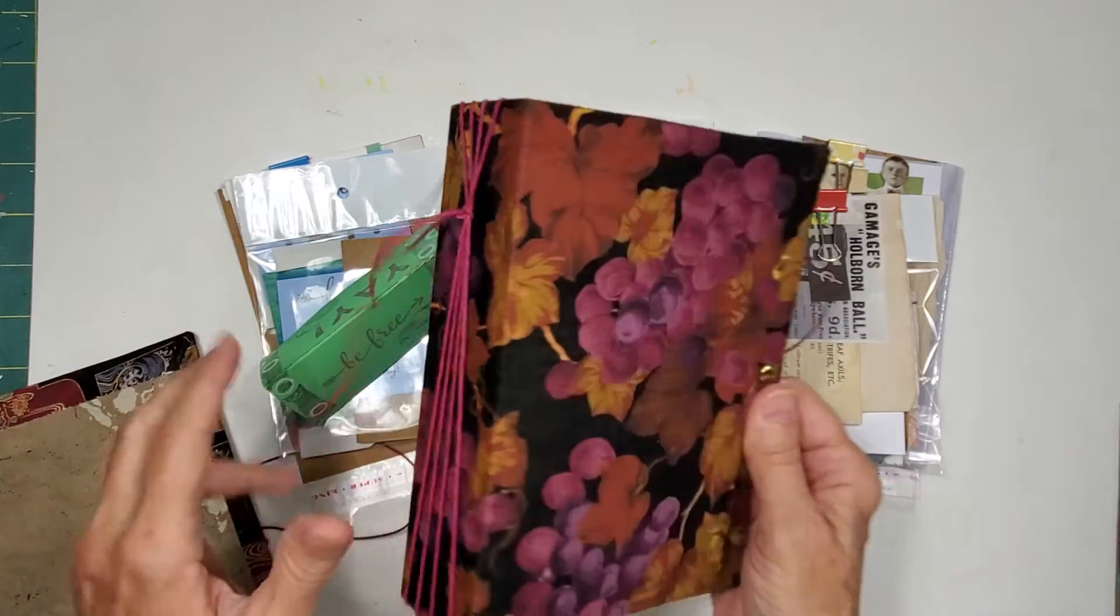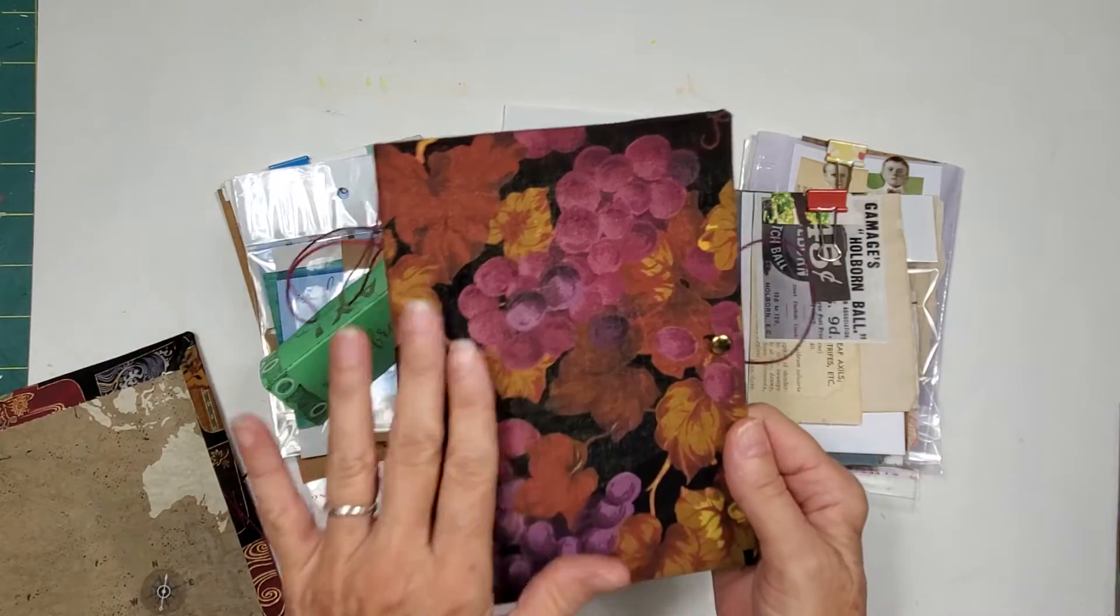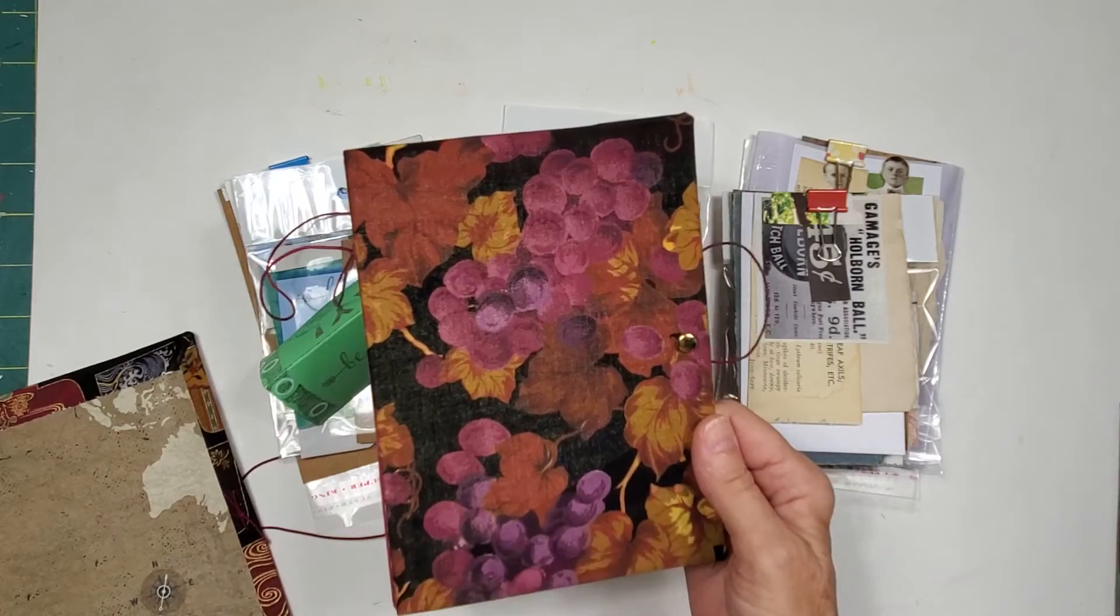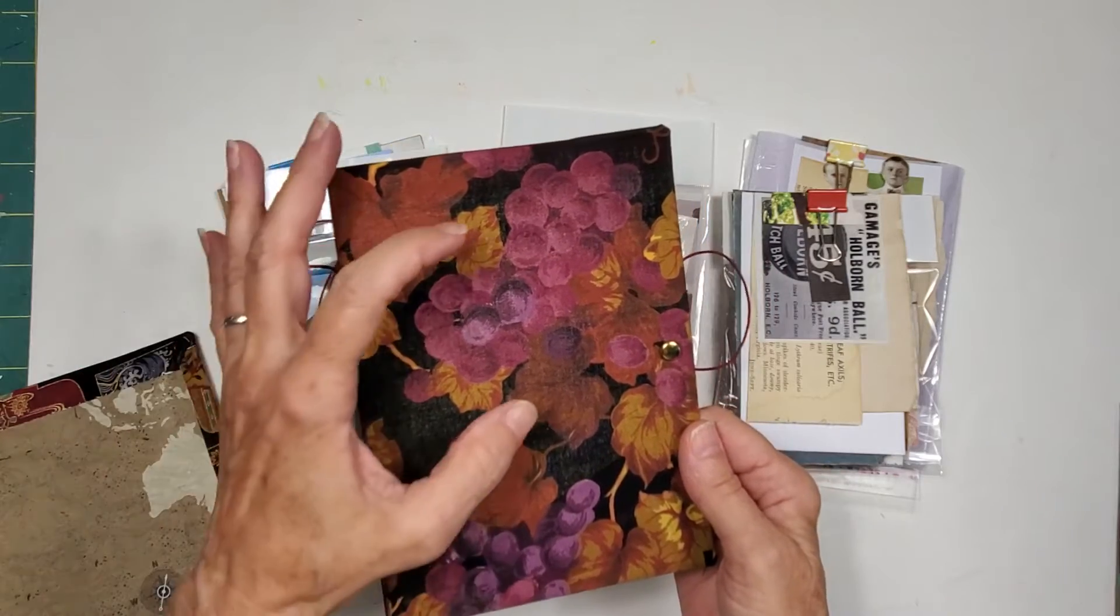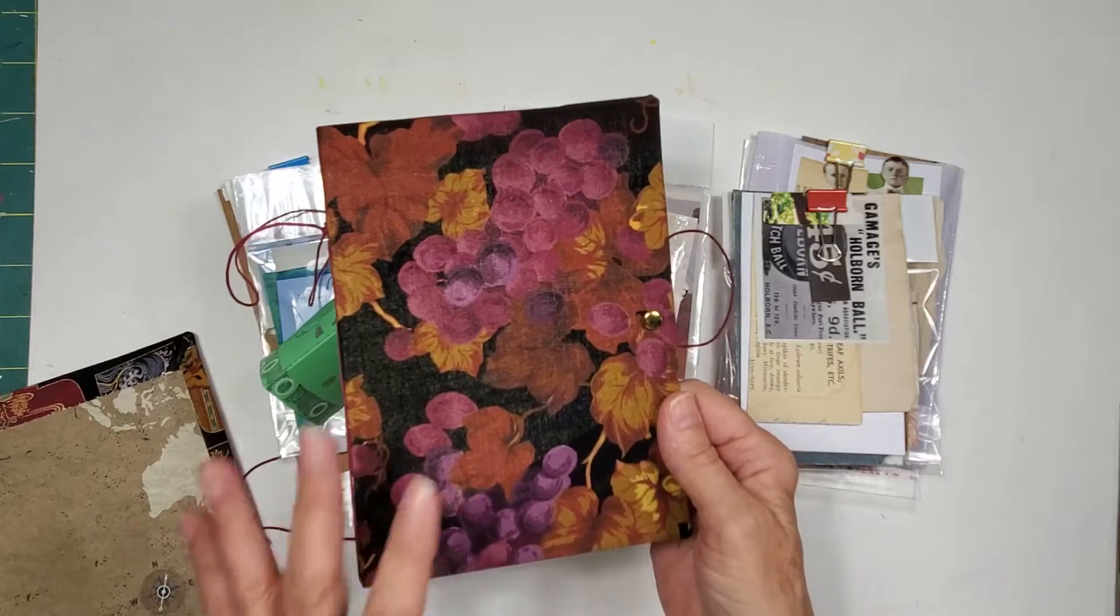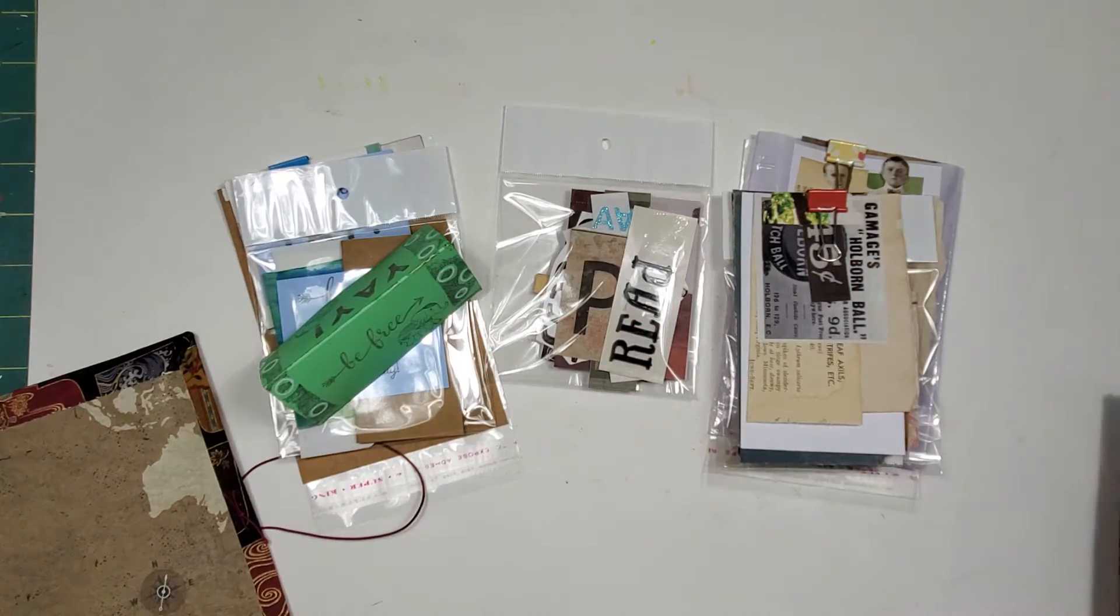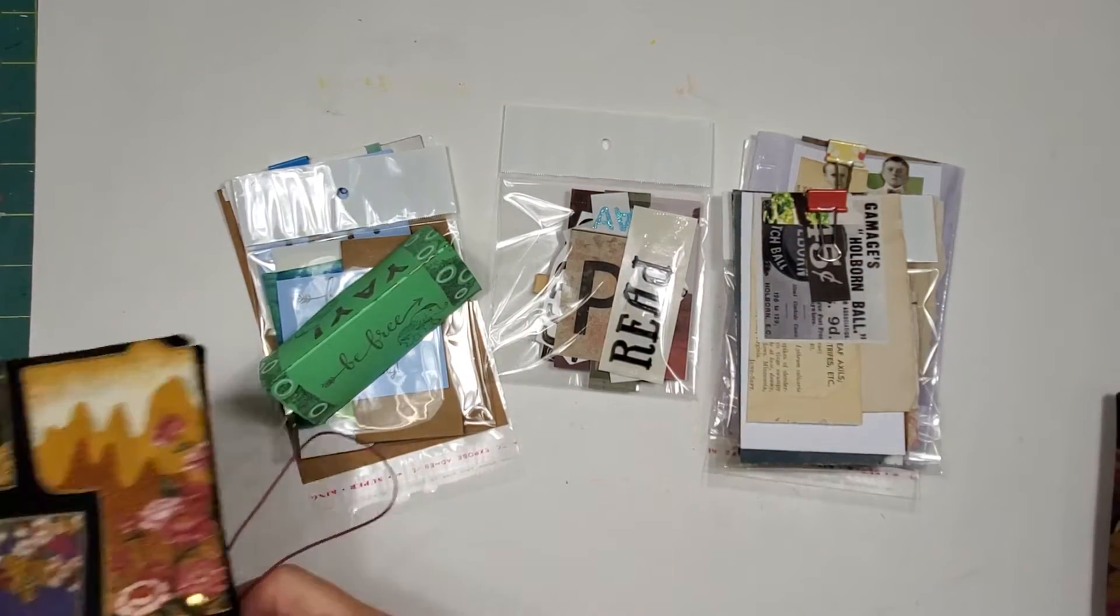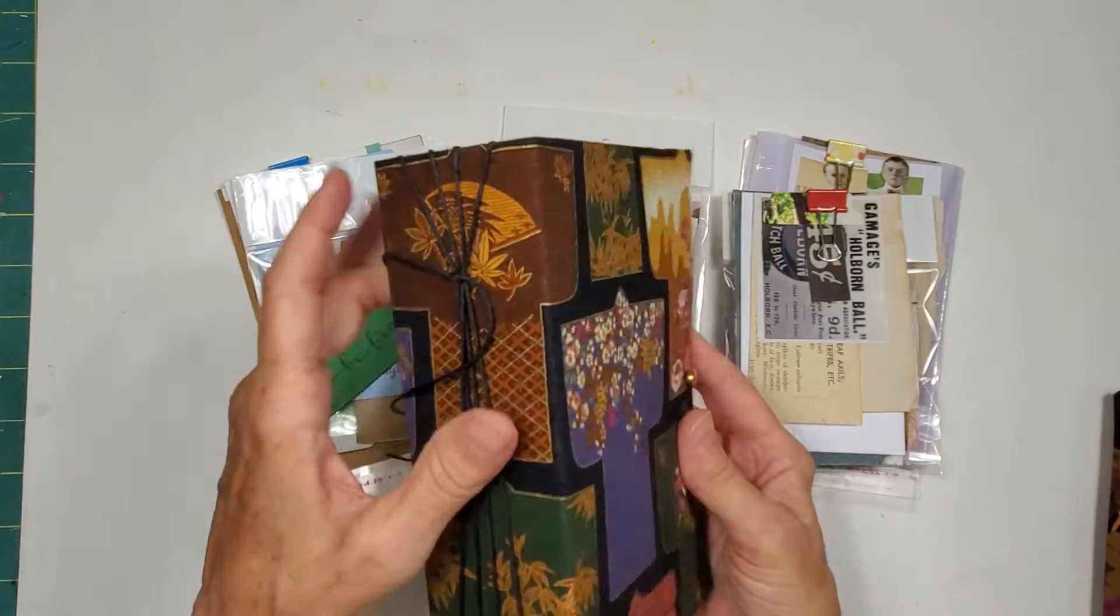Again, the pretty hemp cording on the side. I love this because I really love the grapes against these beautiful grapevine leaves and those twirly things, stems and stuff like that.